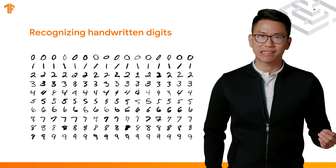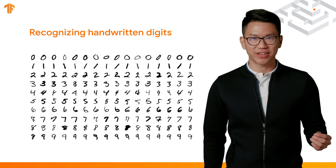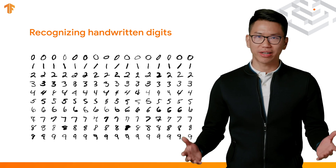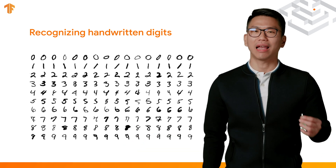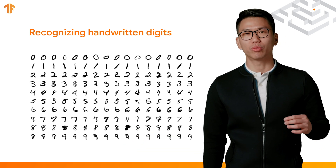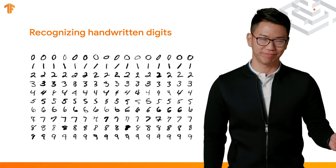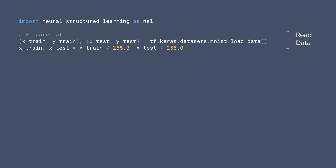Let's use a task in computer vision to see how adversarial learning works. We want to train a neural net to recognize handwritten digits. In the next slide, we are going to write some Python code to design this neural net and train it with adversarial learning. In this code example, we are going to train a neural net to recognize the handwritten digits using adversarial learning. First, we load the MNIST dataset that contains the images of the handwritten digits and their corresponding labels.